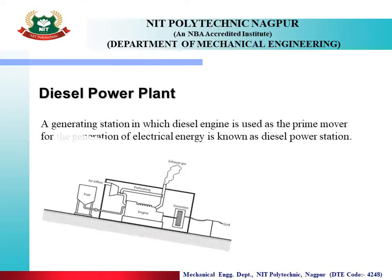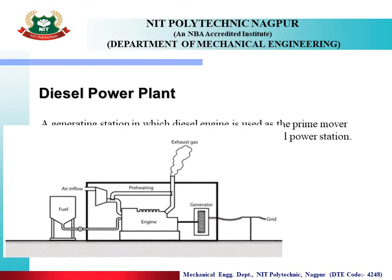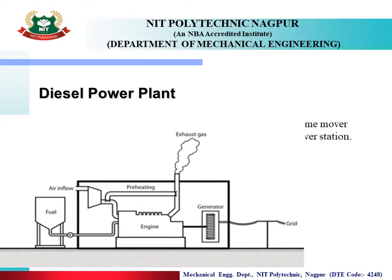A Diesel Power Plant is a unit in which only diesel engines are used. Both 2-stroke and 4-stroke diesel engines can be used, depending on the capacity of the plant. Diesel fuel is supplied to the engine along with air for combustion.